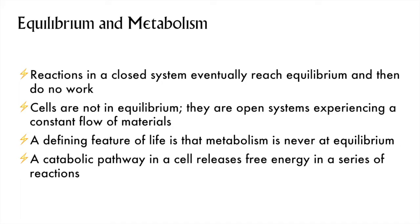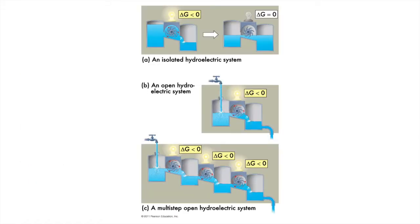In our cells, catabolic pathways have many steps, with different enzymes and different intermediates that release free energy a little bit at a time. It's like a hydroelectric system along a river, with a series of different dams and turbines. A dam works by allowing water to fall and turn a turbine, and the turbine converts the force of the falling water into electricity.